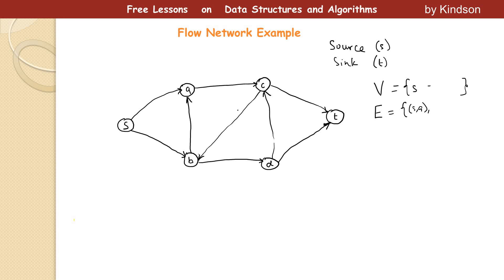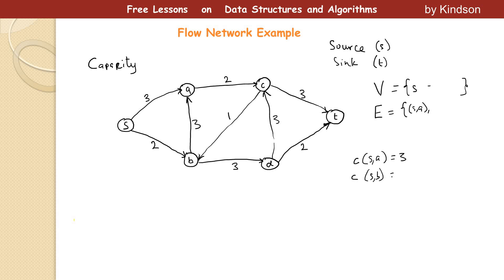Capacity is the amount of traffic that can pass through an edge. In our example, edge (S,A) has a capacity of 3, so C(S,A) = 3. Edge S→B has a capacity of 2. Edge A→C has a capacity of 2, C→T has a capacity of 3, D→T has a capacity of 2, and the edge between C and D has a capacity of 3, with another edge having capacity values of 1 and 3. Your task is to find the capacity C(S,B) and so on.